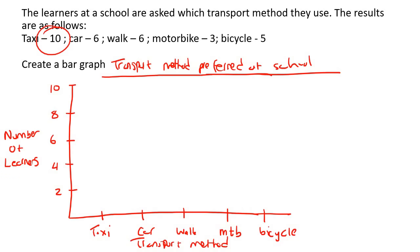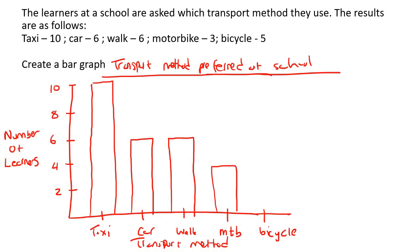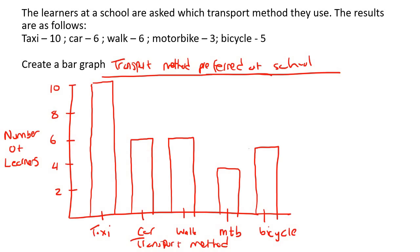Remember there's a gap before the first bar and between each bar. Taxi goes up to 10, car is 6 — leave a gap between each. Walking is also 6, motorbike is 3, and bicycle is 5. That is how we do a bar graph.